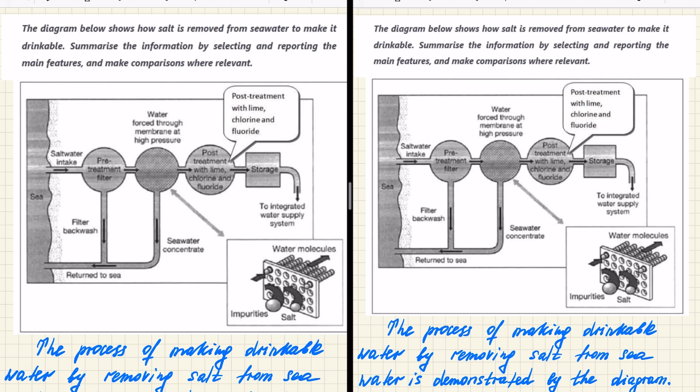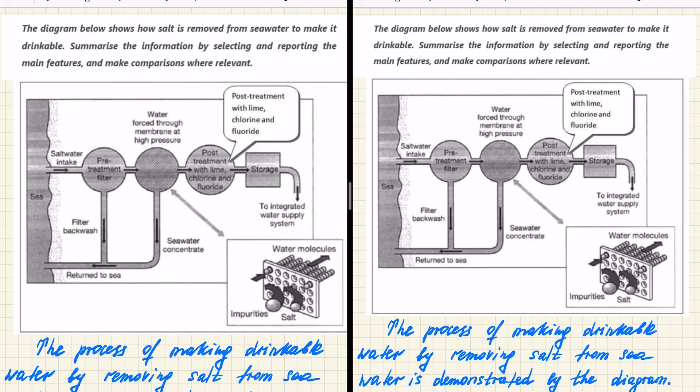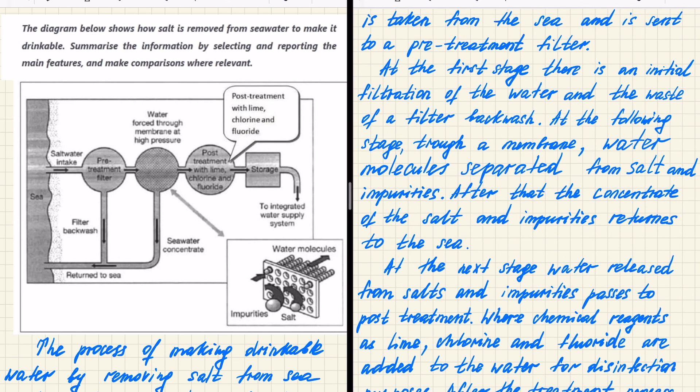As can be seen from the diagram, at the beginning of the process, salt water is taking from the sea and sent to a treatment filter. So I'm just saying that we're getting this sea water and the salt water basically, and sending it to the first process, which is pre-treatment process, and further we're describing what is happening within this process. At the first stage, there is an initial filtration of the water and the waste of a filter backwash. So as you can see, filter backwash.